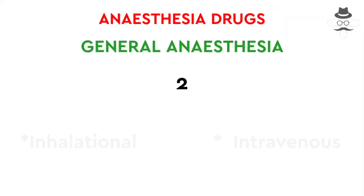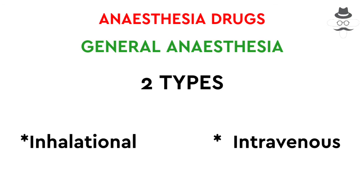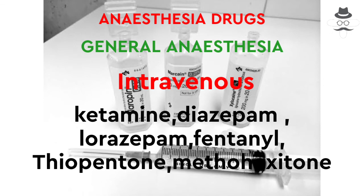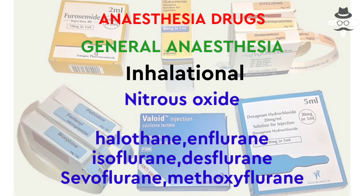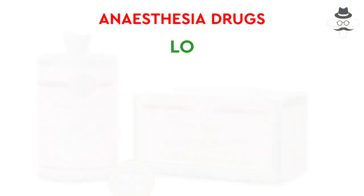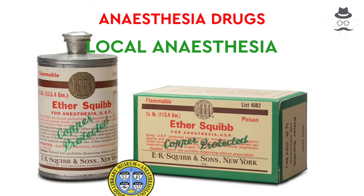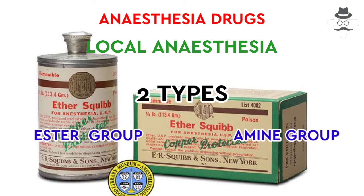There are two types of drugs in general anesthesia: inhalation and intravenous. Intravenous drugs include ketamine, thiopental sodium, and methohexital sodium. Inhalation gases include nitrous oxide, cyclopropane, ether, halothane, and isoflurane. For local anesthetic drugs, there are two types: lidocaine, lignocaine, bupivacaine, and dibucaine.